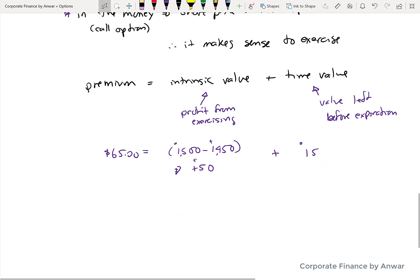So essentially people are trading or willing to pay $15 more than the current exercise profit because there's still time left and there's a possibility that that profit could increase even further.